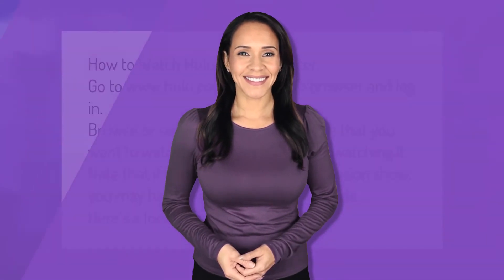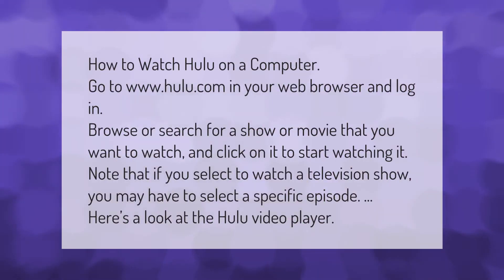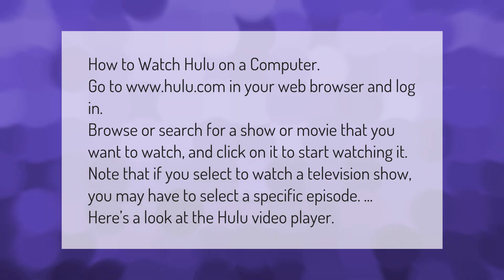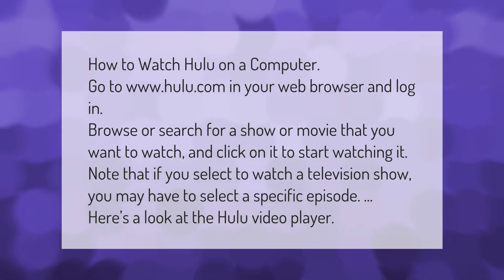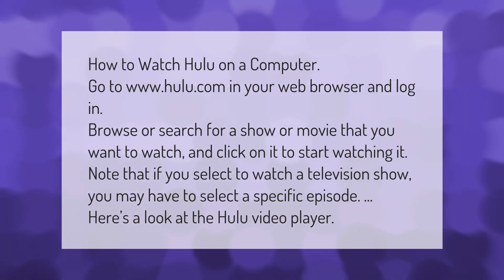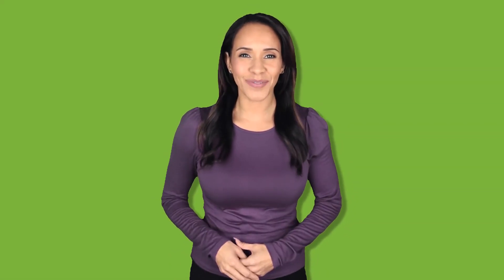How to watch Hulu on a computer: go to www.hulu.com in your web browser and log in. Browse or search for a show or movie that you want to watch and click on it to start watching. Note that if you select to watch a television show, you may have to select a specific episode. Here's a look at the Hulu video player.